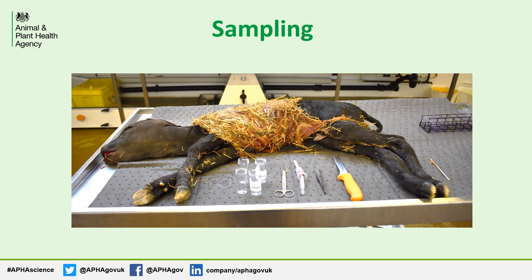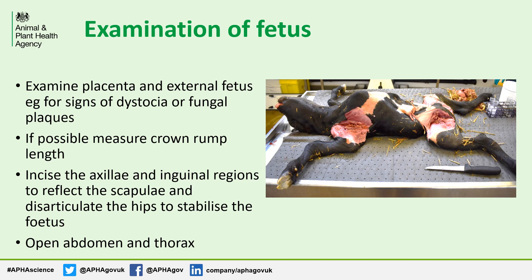So let's look at what samples we need to take. You should examine the placenta for signs of placentitis or fungal plaques and the external fetus looking for signs of dystocia, injury or skin lesions. You can estimate the age of the fetus by measuring the crown rump length if necessary. To stabilize the carcass and help with visibility, incise the axillae and inguinal regions and disarticulate the hips. Then open up the abdomen and thorax and take the relevant samples, recording any unusual findings or pathology. It may be helpful to take photos.